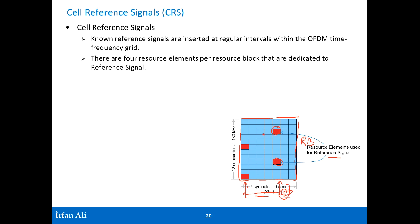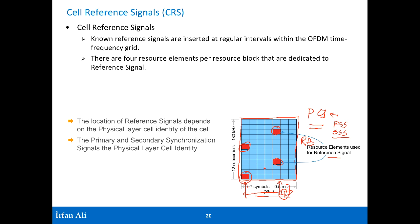The positions of these cell reference symbols are based on the physical cell identity of that particular cell — the identity that the UE has determined from the PSS and SSS, the primary synchronization signal and the secondary synchronization signal. That is why the mobile needs to first read those signals. Once it figures that out, it knows where these resource elements are, and by decoding them it synchronizes well to the various frequencies being transmitted.